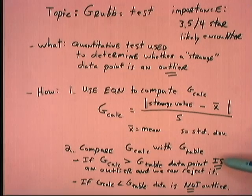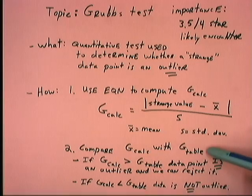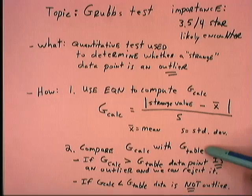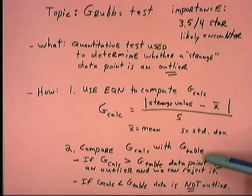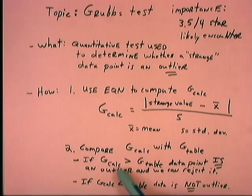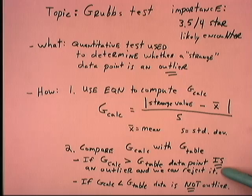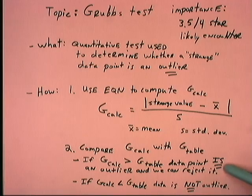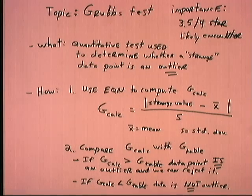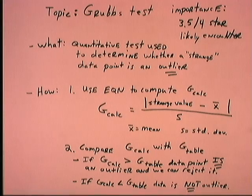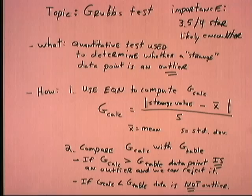After computing G_calc, the next step is to compare it with the tabular value of G, which you get from a data table. You will need to know how to use the data table, but you don't need to memorize it. If G_calc is larger than the tabular value, the data point is an outlier and we can reject it from our data pool. However, if the calculated G is lower than the tabular value, the data point is not an outlier, and we should include it in our data pool — because it's possible that data point is in fact a member of that population.